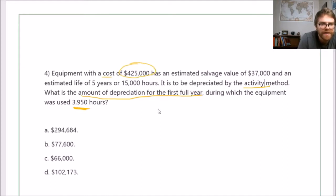Equipment had a cost of $425,000, estimated salvage value of $37,000, estimated life of 5 years and 15,000 hours. With the activity method, we don't worry about the years. That's why it's important to see which method they want, because they're going to give you years and hours, but we're using units of activity, which is hours, so don't worry about the years.